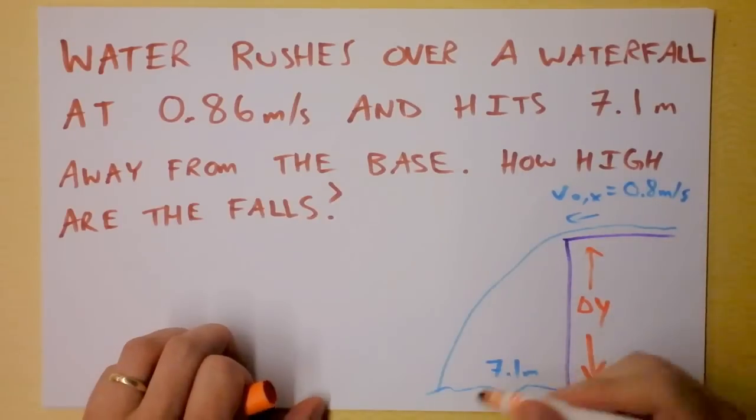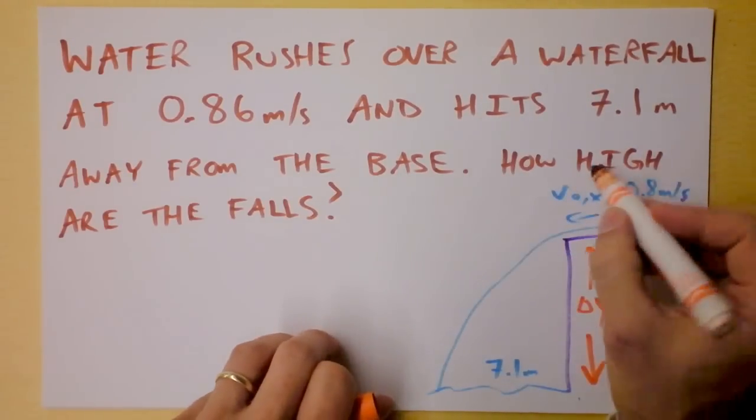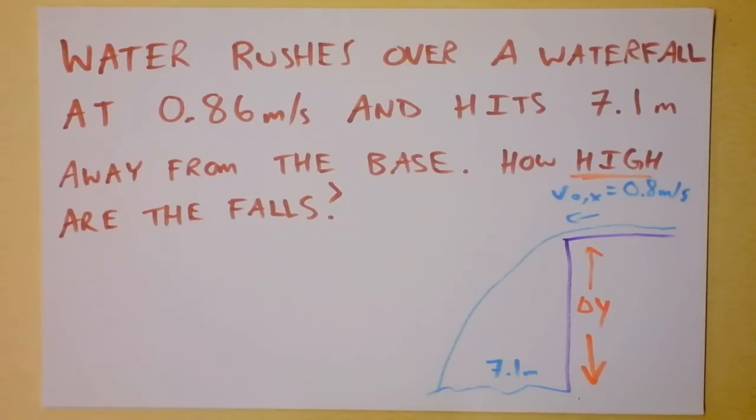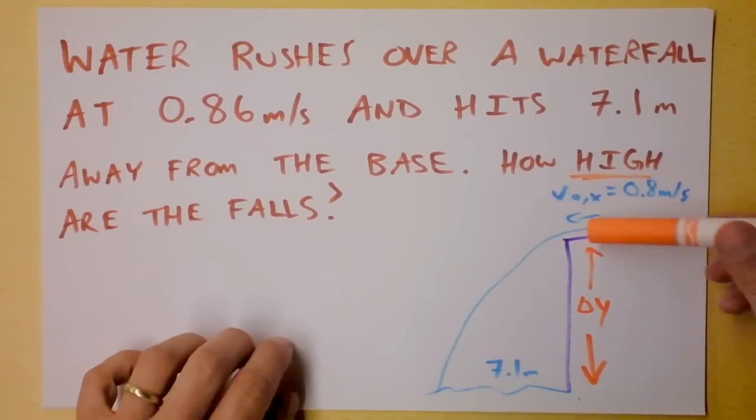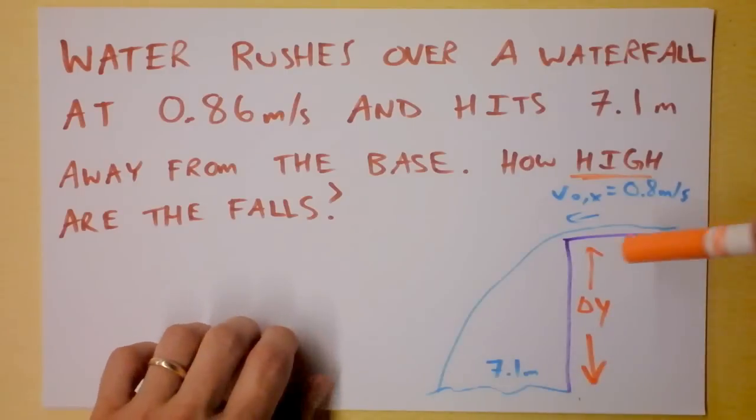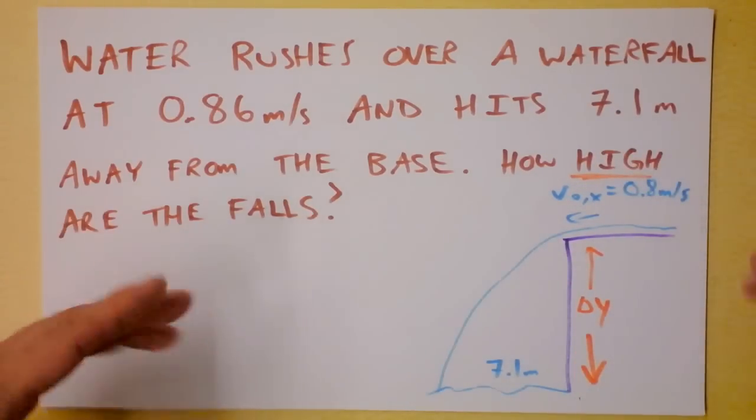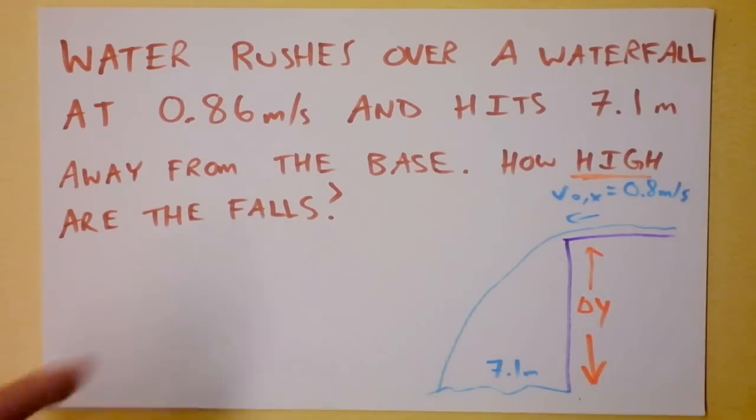Chances are delta y is going to be a negative number but we want to report a positive number because they're asking us how high the falls are. So the water is moving downward but our answer is going to be just the absolute value of that so that we say how high the falls are.